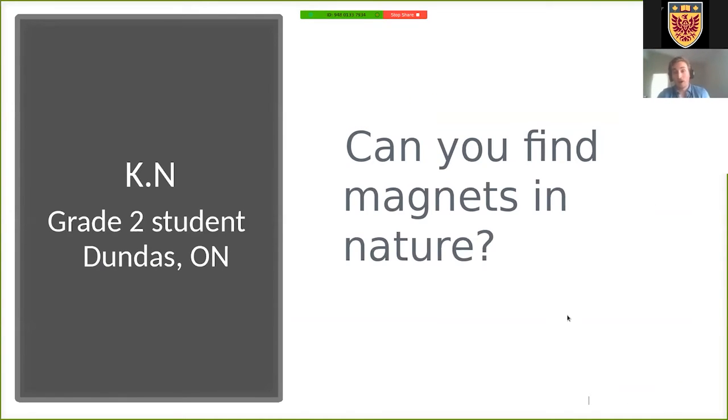Okay, so Kai Ning asks, can you find magnets in nature? And the answer to that is absolutely. So the first magnets that we have in writing come from about 600 BC. And they were discovered by the Greeks, but all over the world, people discovered magnetism.